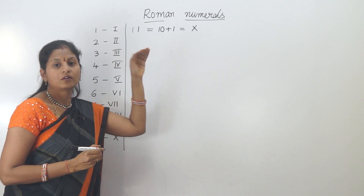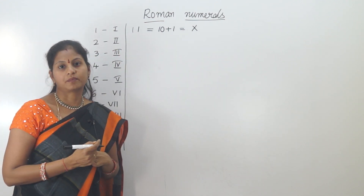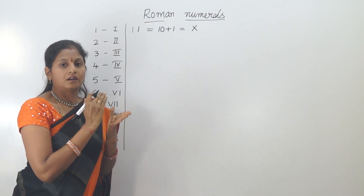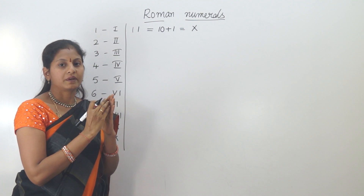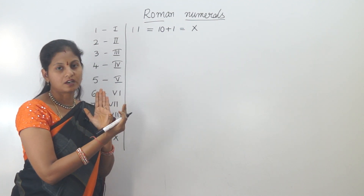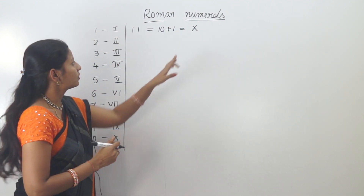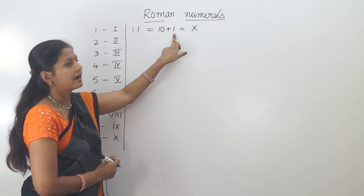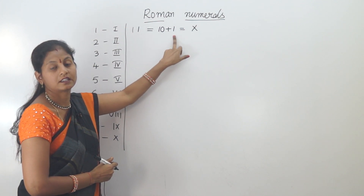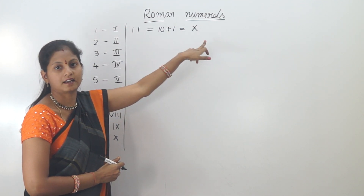We will check some rules in Roman numbers. We will look at how to add 1 to a bigger symbol and a smaller symbol, and we will add 1 to 10.